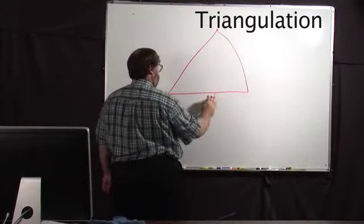His estimate of the moon's distance was not bad — certainly not bad for the instruments he had. He knew it was very far away compared to the radius of the earth. And from Aristarchus's observations, you could then figure out how far away the sun is. Pretty amazing for the ancient Greeks.